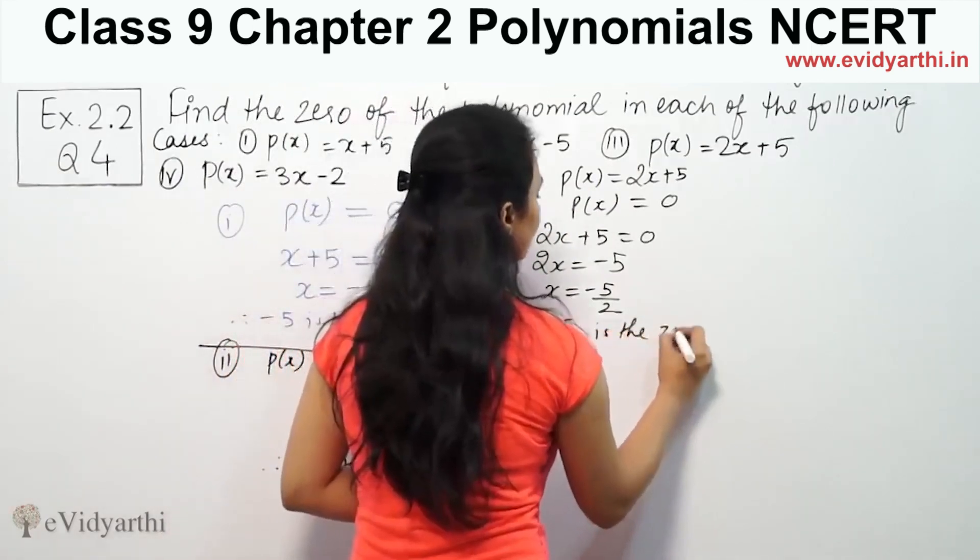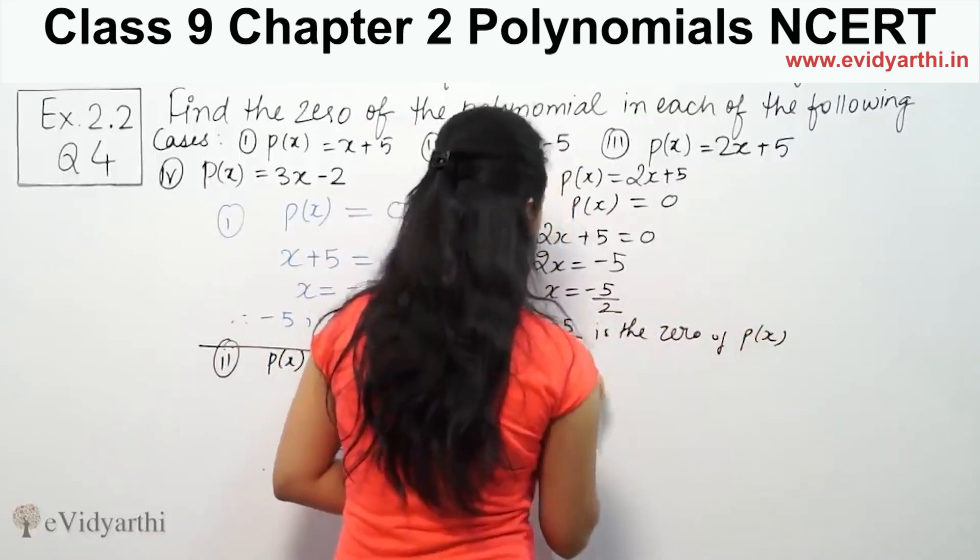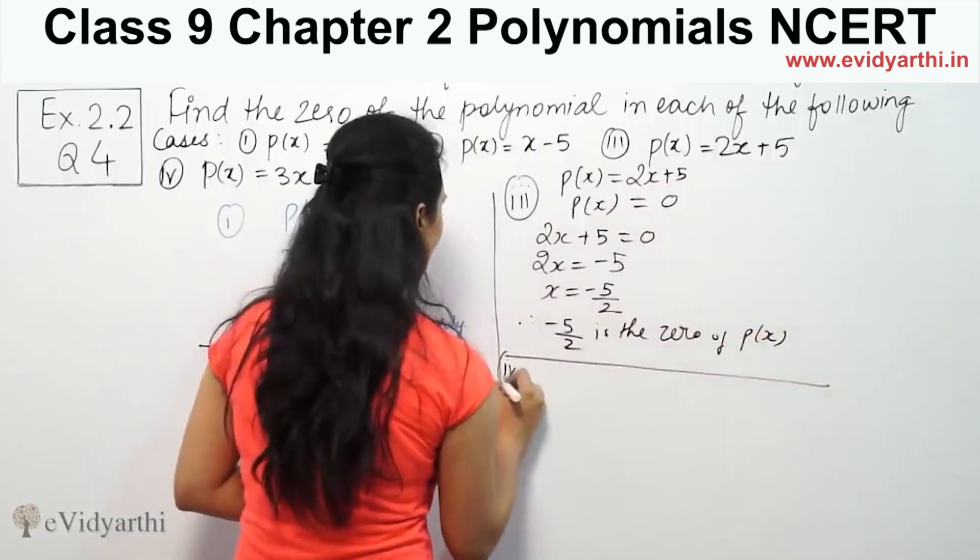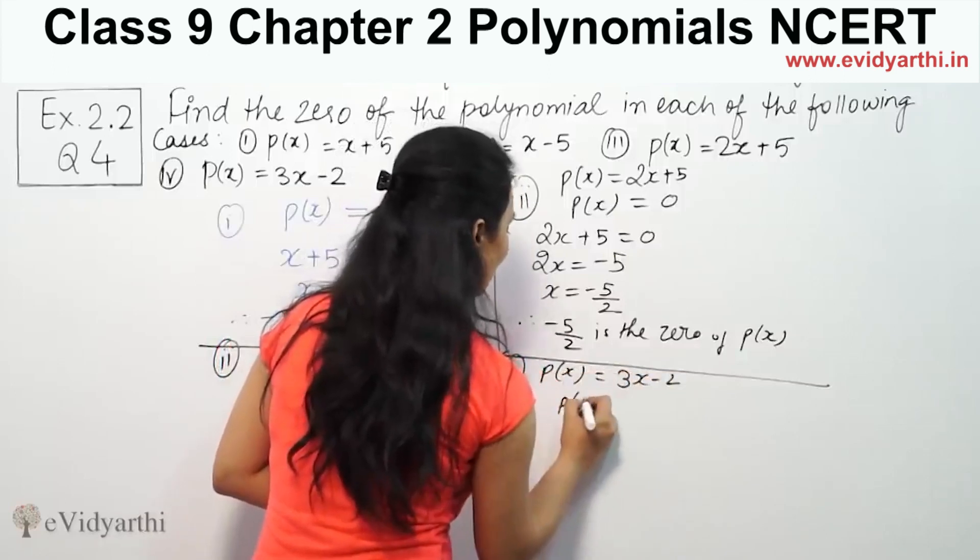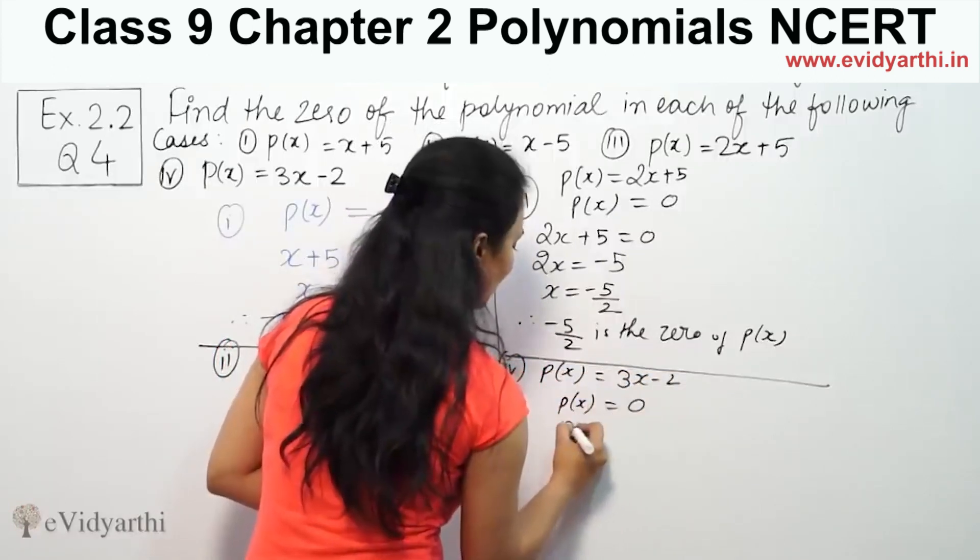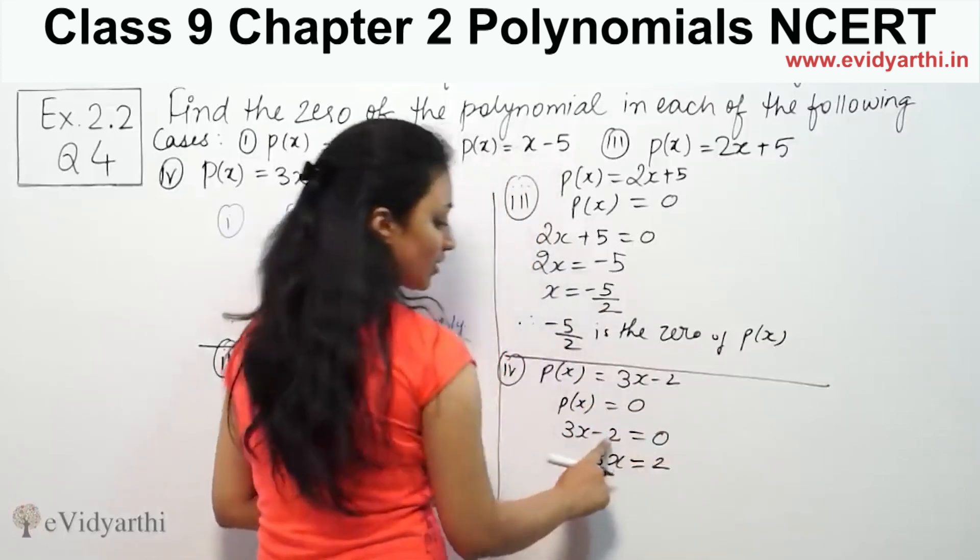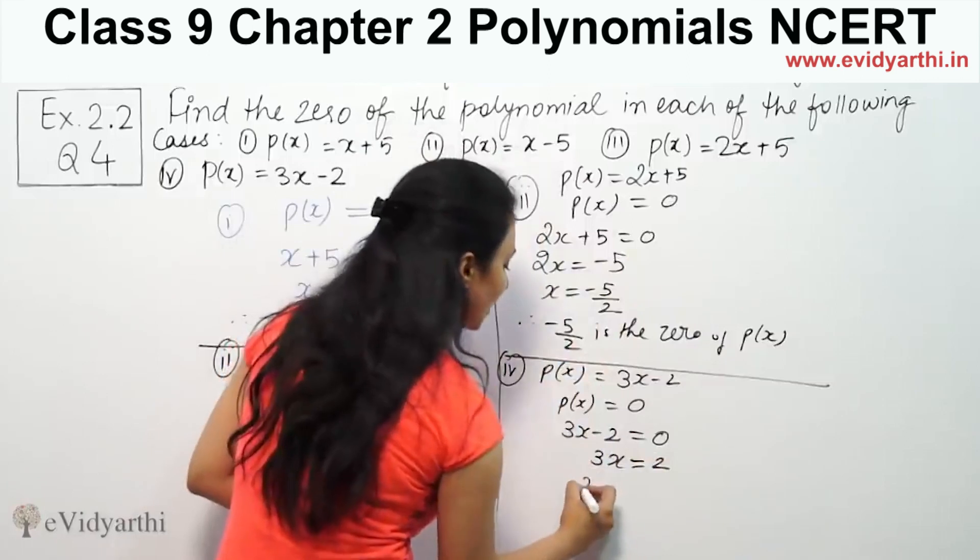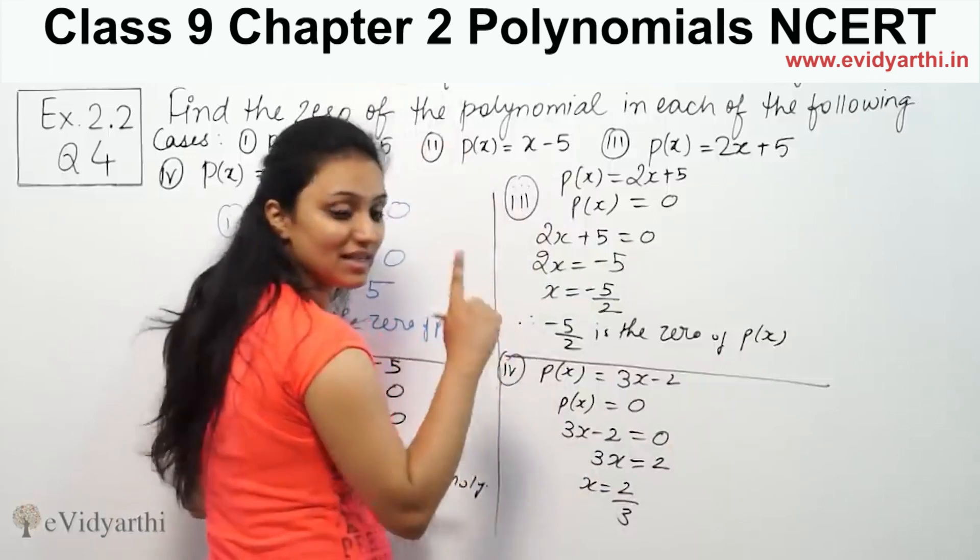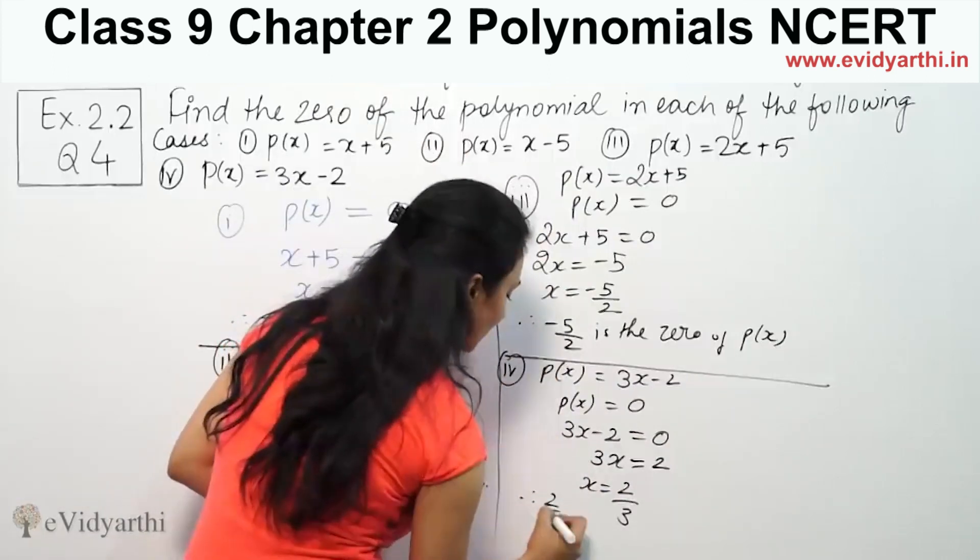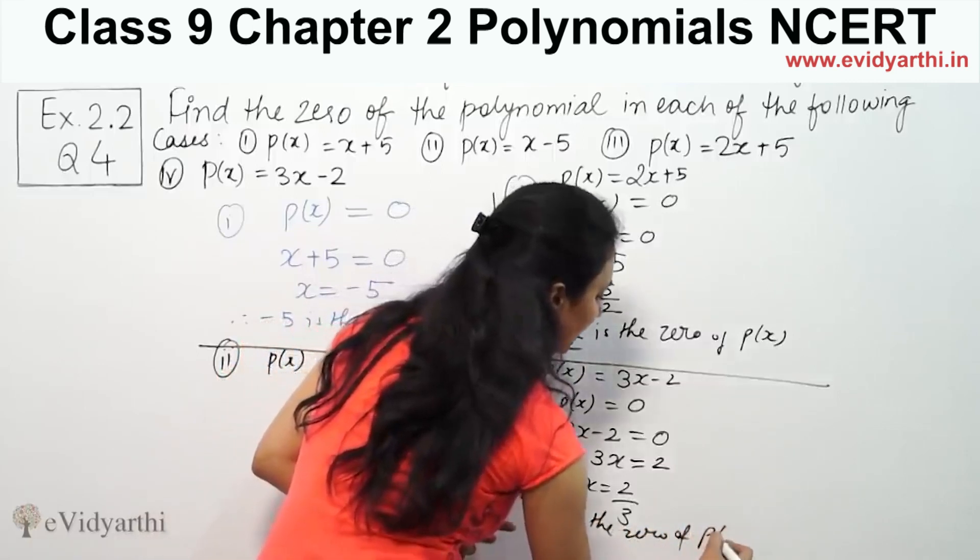Next is number four. p(x) is given as 3x minus two. p(x) equal to zero means three x minus two is equal to zero. So three x will be equal to positive two, so x will be equal to two by three. That means 2 by 3 is the zero of p(x).